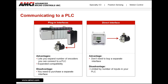Now that we have our sensors, how do we get that information into our controller? We'll assume that controller is a PLC, as it's the most common form of control in industrial automation. The first method is to use a plug-in interface. This allows you to expand the number of encoders you can connect to a PLC. If you have a sensor such as a resolver or an SSI encoder, you need to add a plug-in module, which expands the compatibility and types of sensors you can use. The main disadvantage is that you need to purchase a separate interface for each type of sensor.